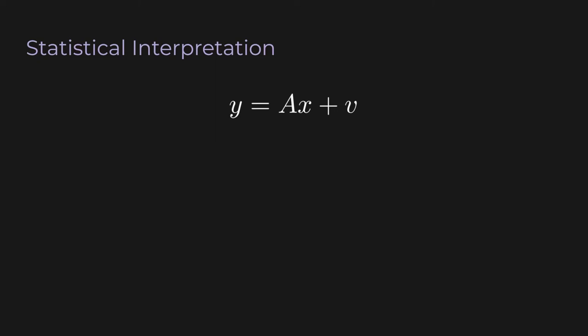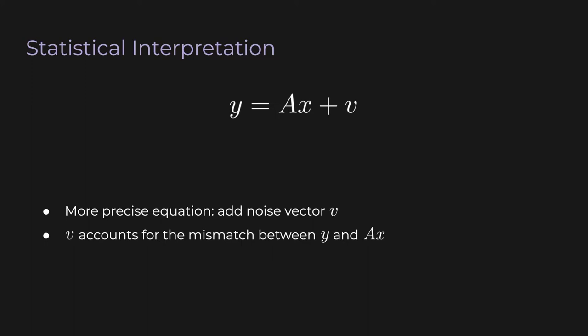Now let's add a term v at the end: y = Ax + v. This makes the equation more precise. V is a vector of noise — it accounts for the mismatch between y and Ax. Before, the equal sign between y and Ax wasn't really an equal sign, since not all equations will be satisfied. V represents that lack. If A is formed from sensor readings, we can add measurement error to represent anything not modeled by the equation. Now y exactly equals Ax plus this noise vector v.